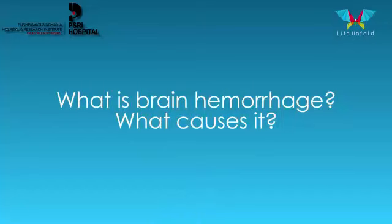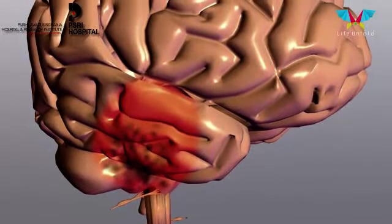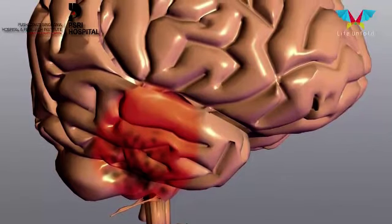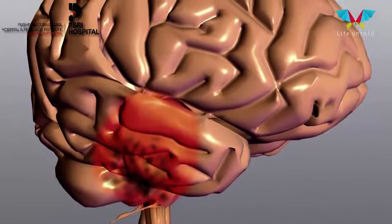Hello, I am Dr. Sumik Goyal. Brain haemorrhage is leaking of blood from the normal blood vessels in which it is flowing. Whenever this blood, which should have been flowing into the normal blood vessels of the brain, leaks into the brain substance, there is damage to the normal functioning of the brain.